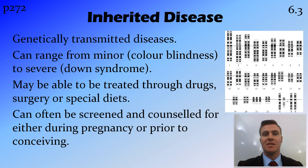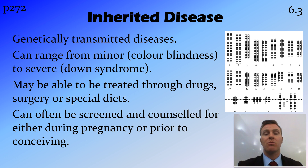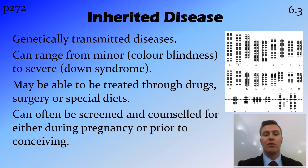The first type is inherited disease. This is a disease that has a genetic basis and is passed from parent to offspring. There are many different inherited diseases — some are minor, like colour blindness, while some are quite major, like Down syndrome, which we'll look at shortly. You may be able to treat these diseases through drugs, surgery, or diet, but they're generally not curable. However, you can screen for them prior to or during pregnancy, and family counselling can be provided once the likelihood is determined.